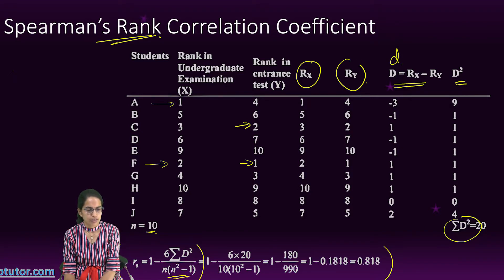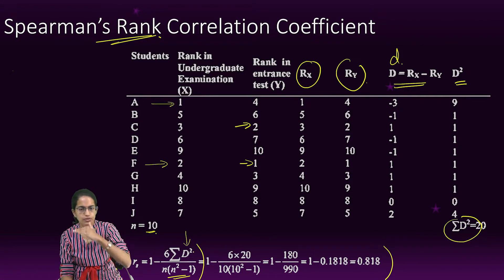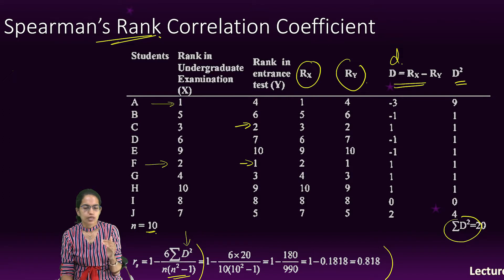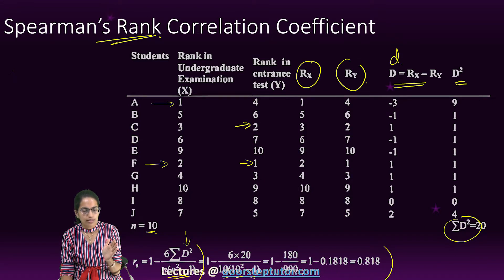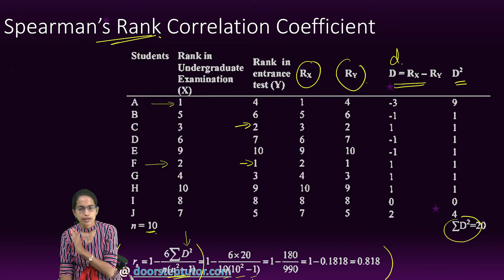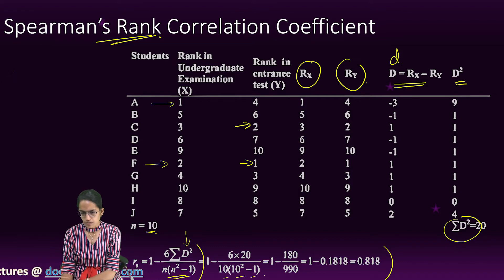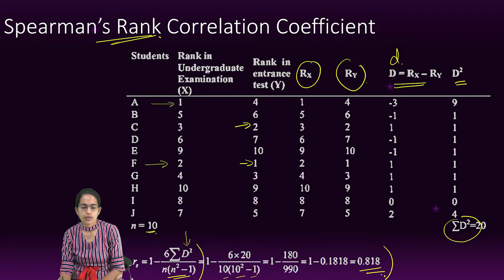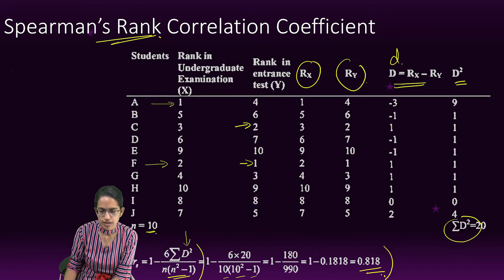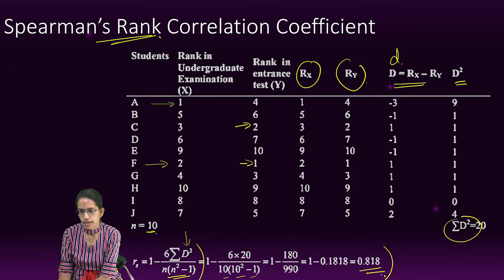Here, d is the difference between the two ranks for each item, and n is the number of items — we divide by n multiplied by n-squared minus 1. Based on that calculation, the correlation comes out to be 0.8, which is a strong correlation.